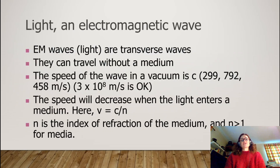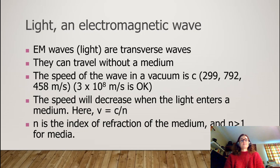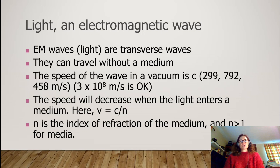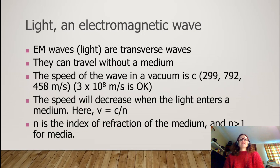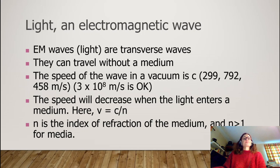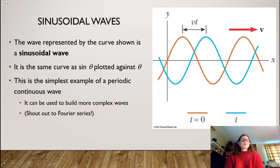For today I'm going to focus mostly on light — electromagnetic waves. Light is a transverse wave and it can travel without a medium. The speed of light in a vacuum is 3×10⁸ meters per second, which fell out of the derivation from Maxwell's equations. Of course, light can have a different speed if it's traveling through a material; then the velocity is 3×10⁸ divided by n, where n is the index of refraction of that material.